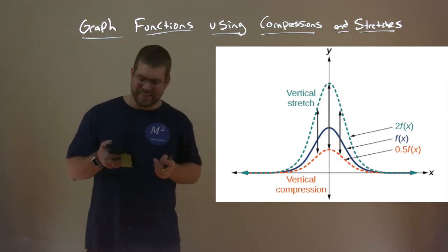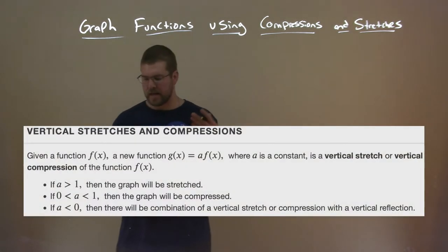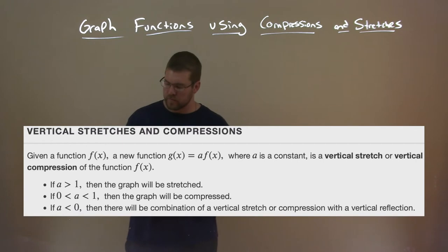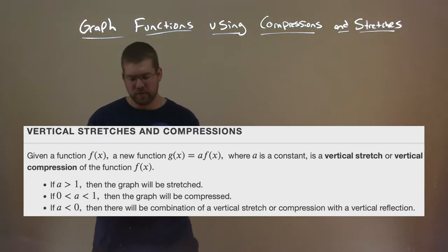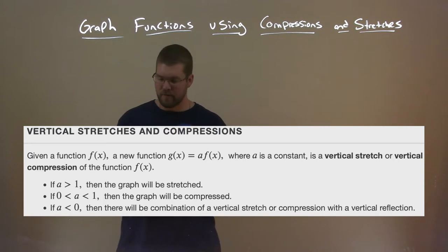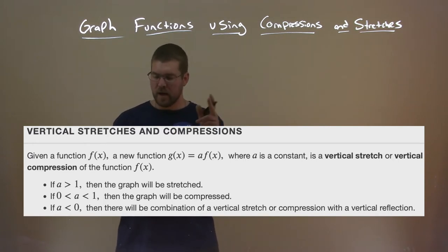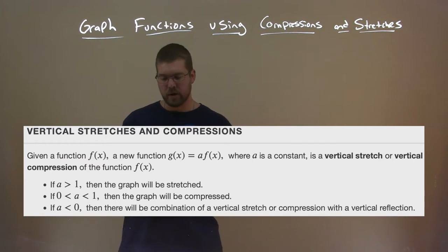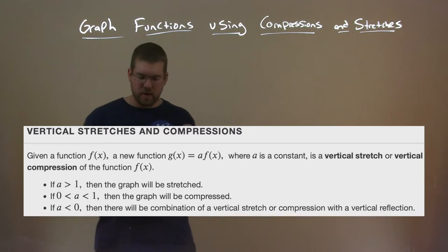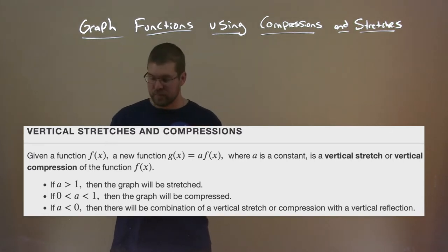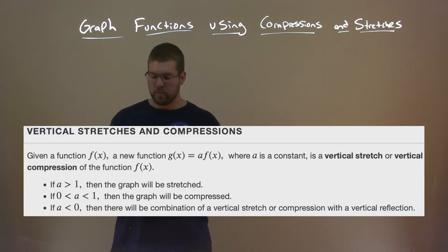So let's dive into a definition: vertical stretches and compressions. Given a function f of x, a new function g of x is equal to a times f of x, where a is a constant. It is a vertical stretch or vertical compression of the function f of x. If a is greater than 1, then the graph will be stretched. If 0 is less than a which is less than 1, the graph will be compressed.